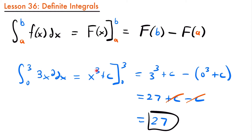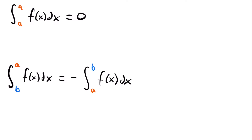Now that you've seen the basic process of solving a definite integral, let's look at the properties of definite integrals. The first property: if we have the integral from some bound to the same bound for a function, that's going to be equal to 0. For example, the integral from 3 to 3 of 3x squared dx equals 0, because you'd be subtracting the same value from itself. If you ever see an integral with the same bounds, it's just equal to 0.